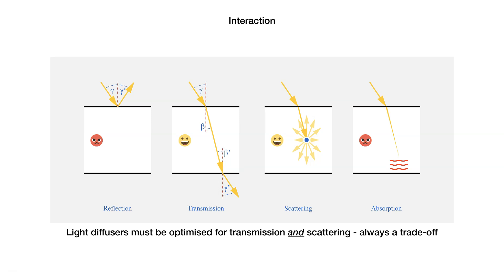So, because you want to diffuse, the material should be optimized for maximum transmission and maximum scattering. Since one cannot maximize both together, there will always be a trade-off.